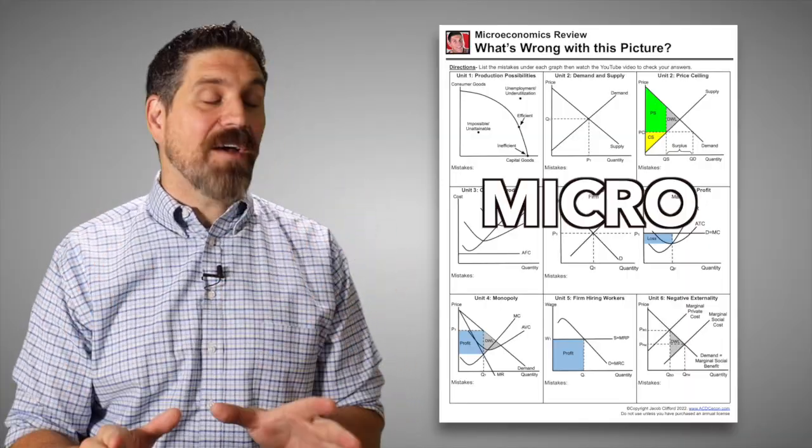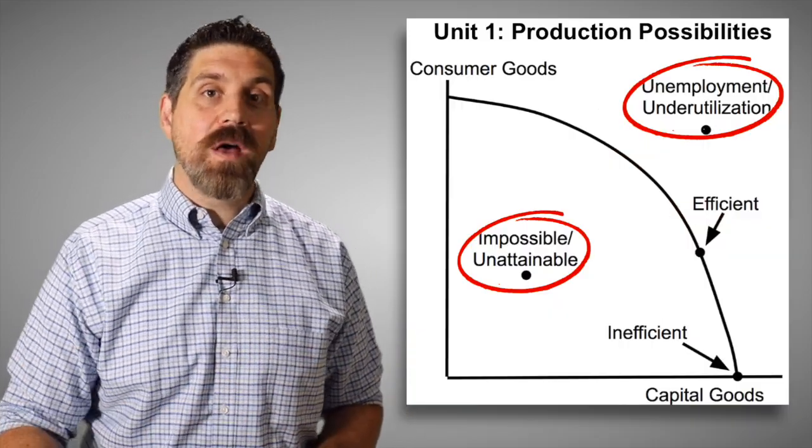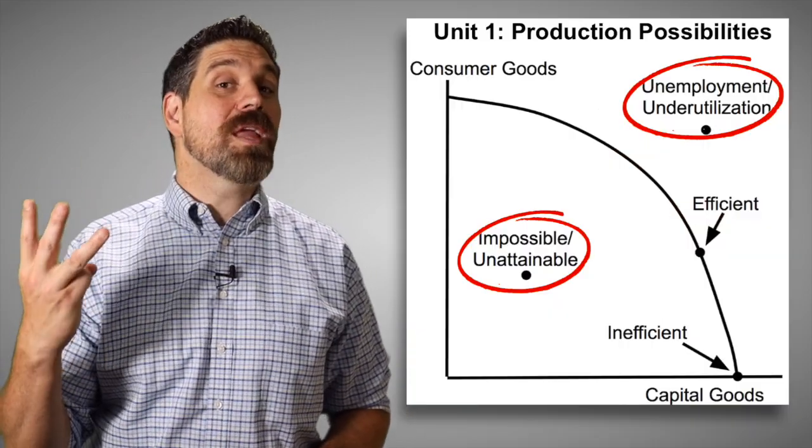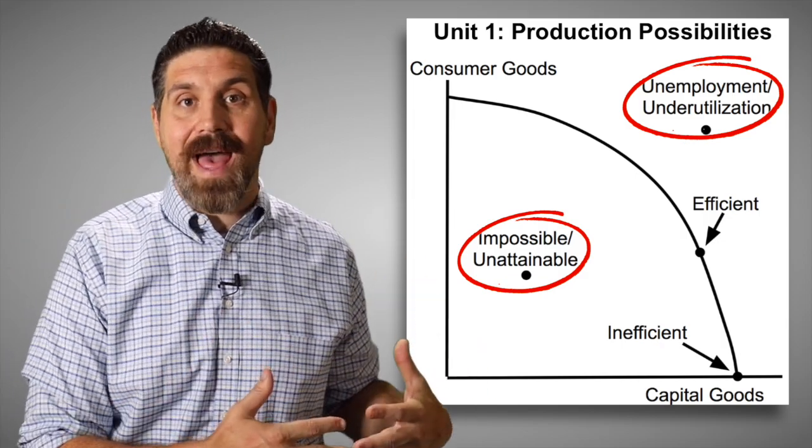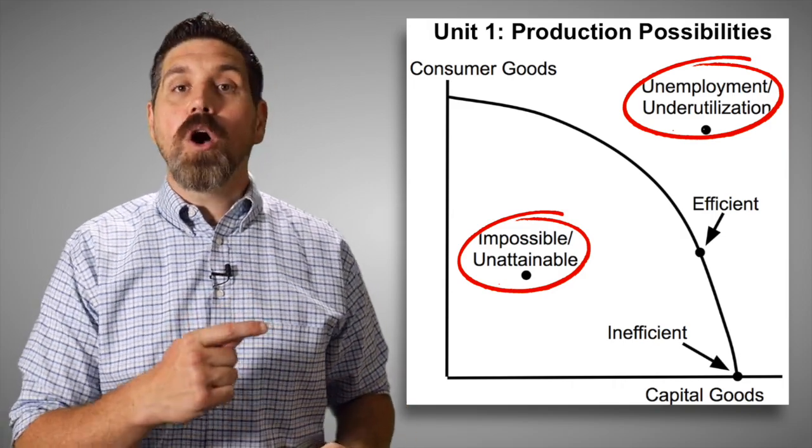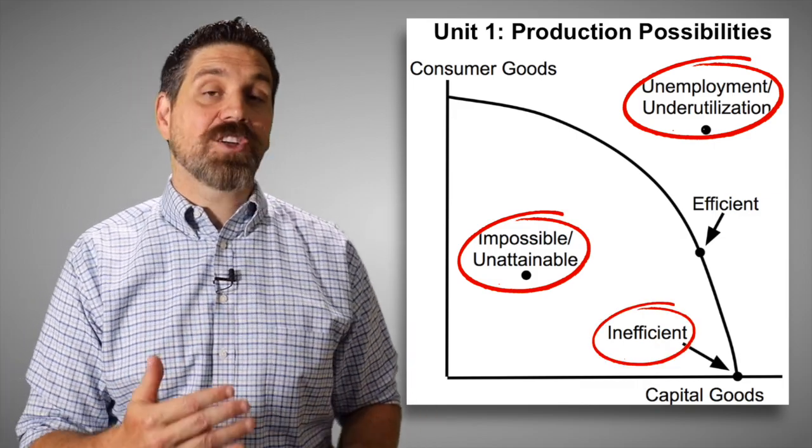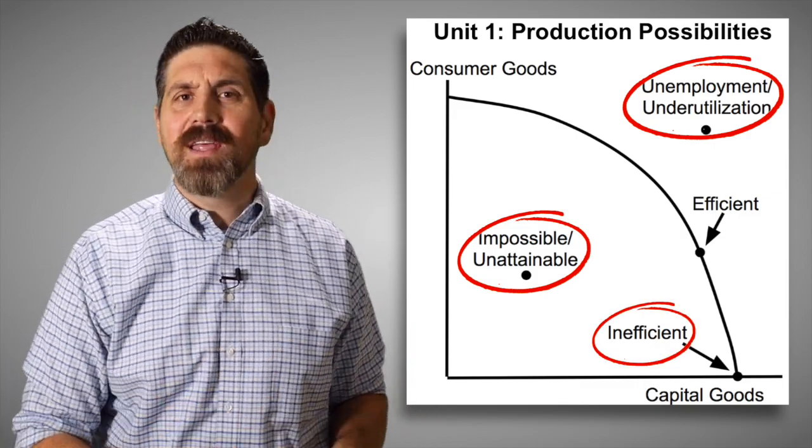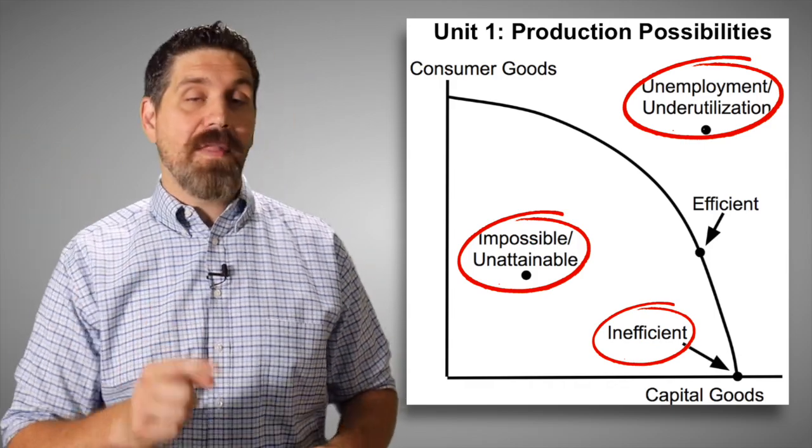Let's start off in unit one with an easy one, the production possibilities curve. There's three mistakes. A point inside the curve is attainable. You can produce that, it's just inefficient or underutilizing our resources. So that's mislabeled. Also a point outside the curve, that's not inefficient, that's unattainable. Also any point along the curve is actually efficient. So labeling that inefficient, that's incorrect. Inefficient would be a point inside the curve. So three mistakes on that graph.